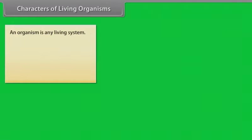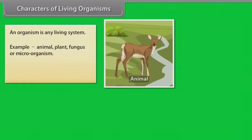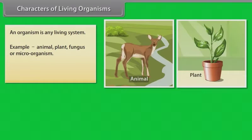Characters of living organisms: An organism is any living system. Examples include animal, plant, fungus, or microorganism.